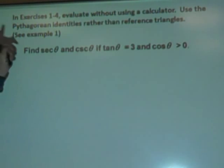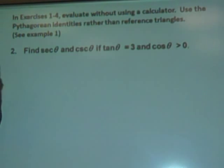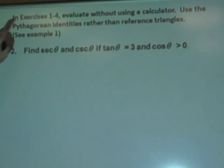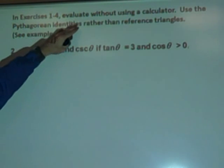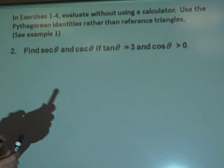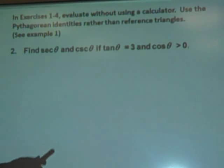Today we're going to look at problem two, using Pythagorean identities to find trigonometric ratios. Here we have an exercise one through four — evaluate without using a calculator. Use Pythagorean identities rather than reference triangles.